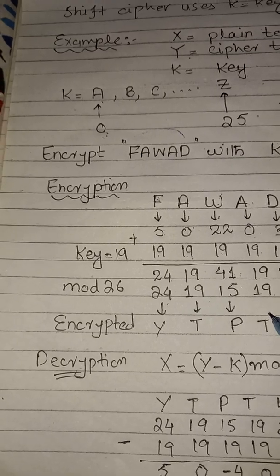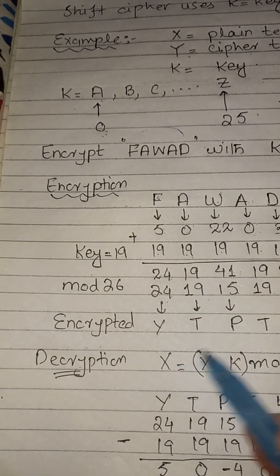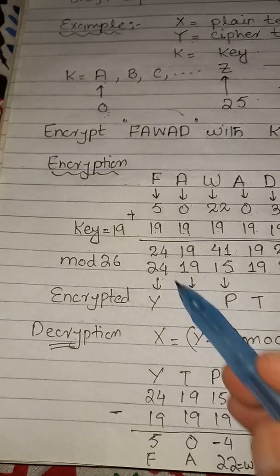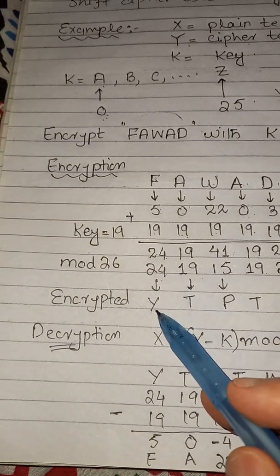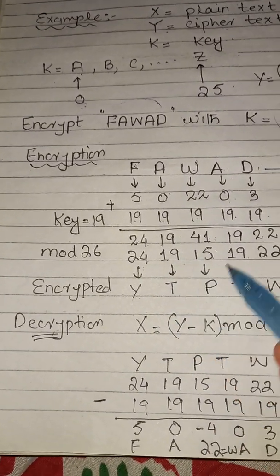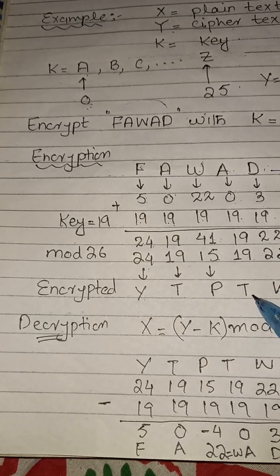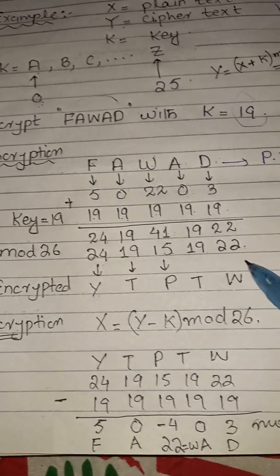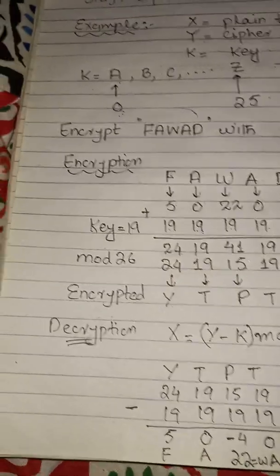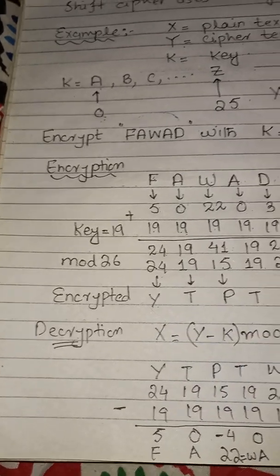Now we convert the numeric results back to alphabets. 24 is Y, 19 is T, 15 is P, 19 is T, and 22 is W. So the encrypted ciphertext for 'Fawad' with key 19 is 'YTPTW'. This is the encrypted information.